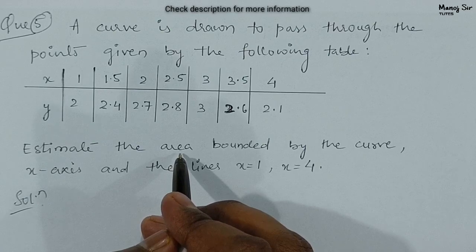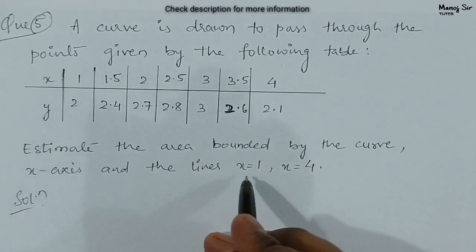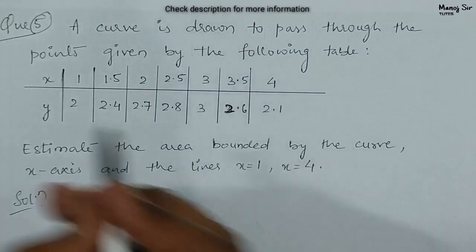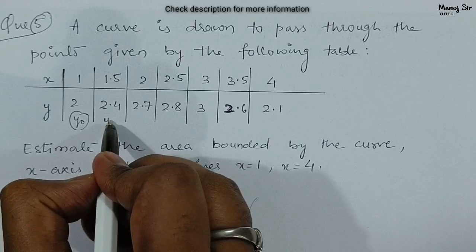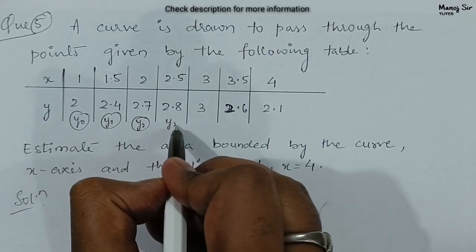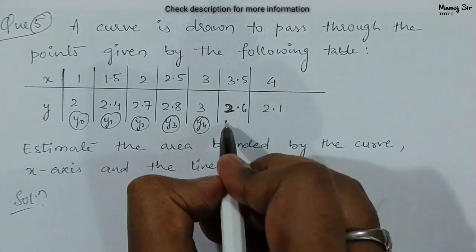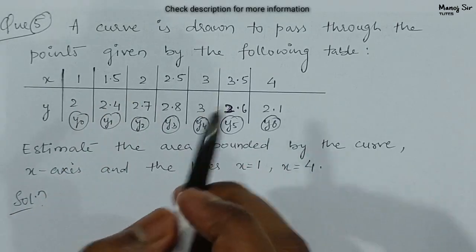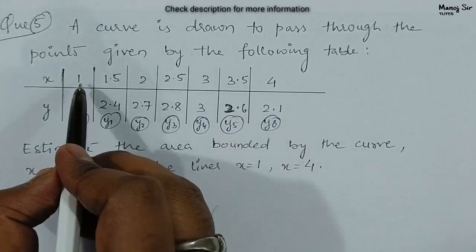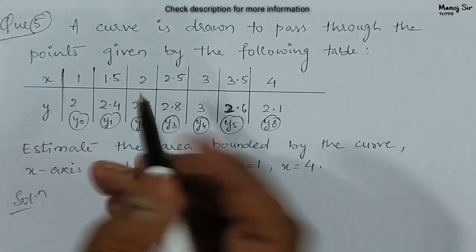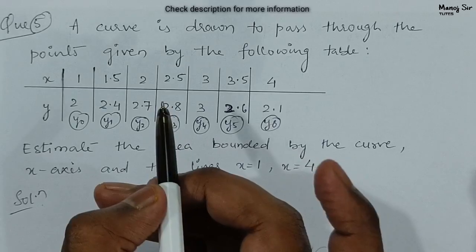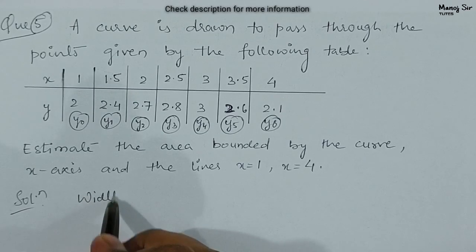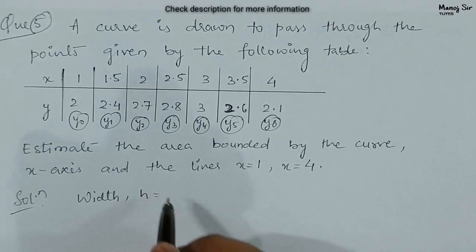We need to estimate the area bounded by the curve, x-axis, and the lines x equals 1 and x equals 4. Here you can see this is y0, y1, y2, y3, y4, y5, y6. First of all, we need to find the value of small h, that is the width. The gap between each x value is 0.5.